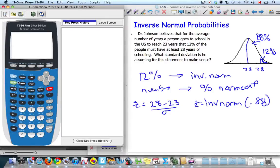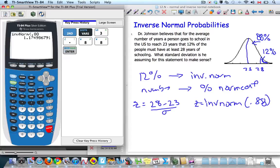So if I go to my calculator, go second distributions, number three is my inverse norm. I want to go 0.88. There.